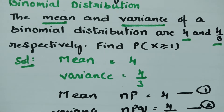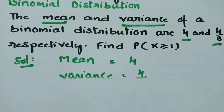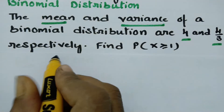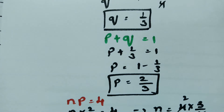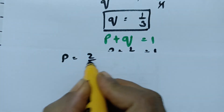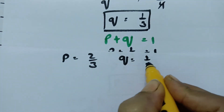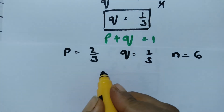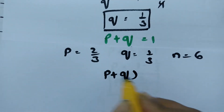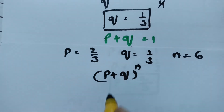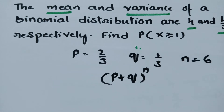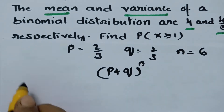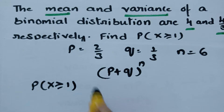In this binomial distribution, mean = 4 and variance = 4/3, giving us p = 2/3, q = 1/3, and n = 6. According to the binomial distribution, this is (p + q)^n. Now what do we have to calculate? We have to calculate the probability of x greater than or equal to 1.